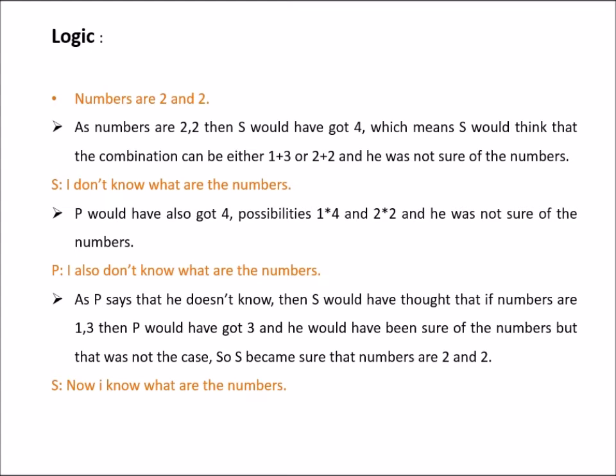Now S would have thought that if numbers are 1 and 3, then P would have got 3 and he would have been sure of the numbers, but that was not the case. So S became sure that the numbers are 2 and 2. So S says that now I know what are the numbers.